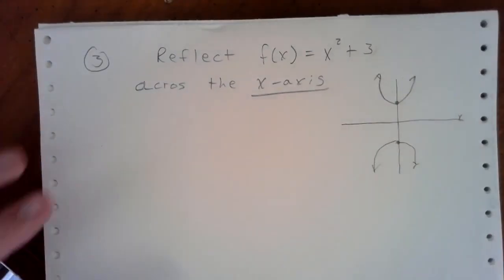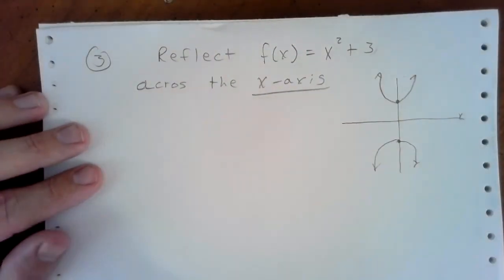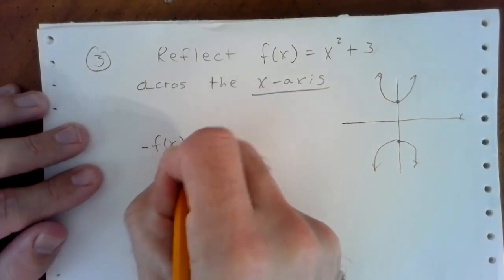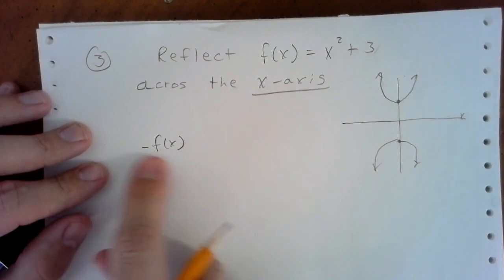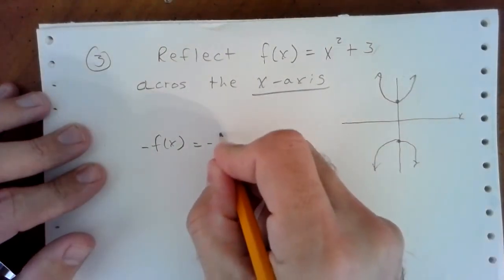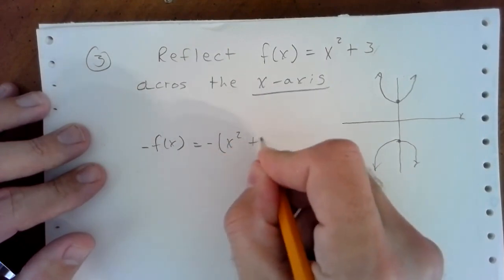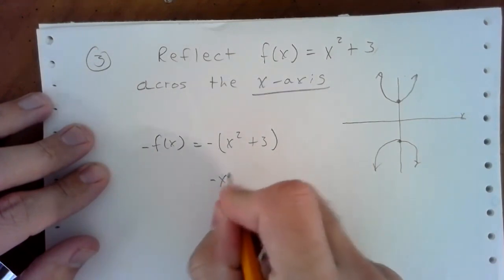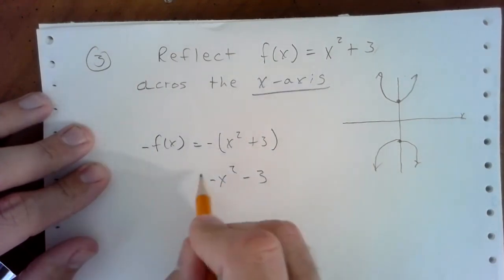To do it by hand, the reflection across the x-axis is always negative f of x, which means you put a negative around the whole thing. So in our case, it's going to be negative x squared plus three, and then you just distribute the negative in. So you get negative x squared minus three.